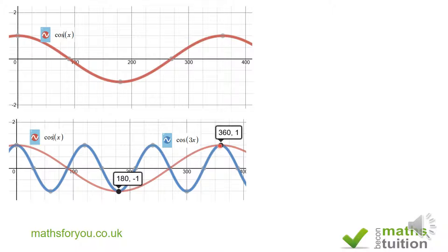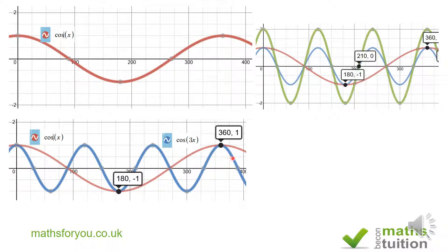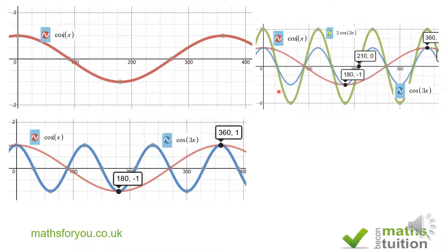Now the green graph is 2·cos(3x). From the line of symmetry y = 0 (the x-axis), the amplitude a is 2 — that's the distance from the line of symmetry to the maximum point, which gives us 2 units. So a is 2.